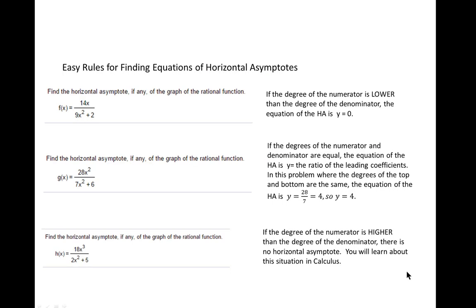We've already talked about finding the equations of the vertical asymptotes, so we're going to discuss the three easy rules for finding the equations of horizontal asymptotes.